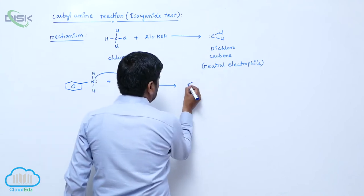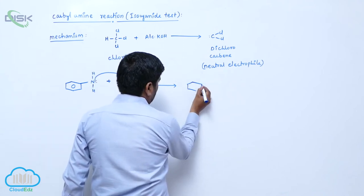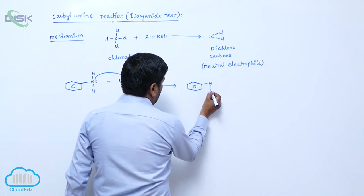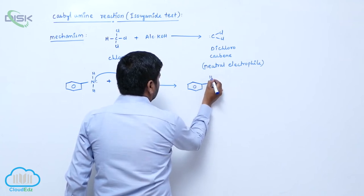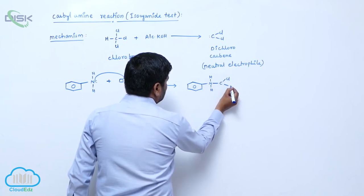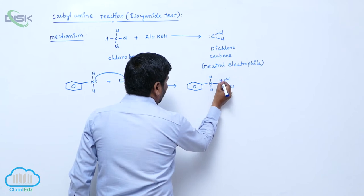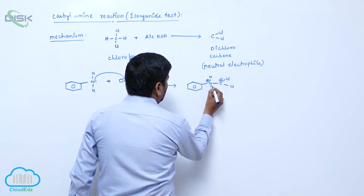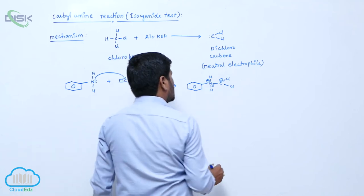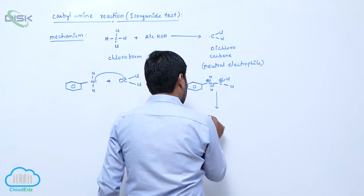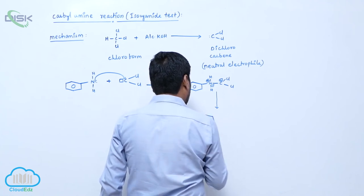Now it converts into nitrogen hydrogen hydrogen. Then here is Cl, here is also Cl, here carries negative charge, then plus. First loss of H plus from nitrogen.